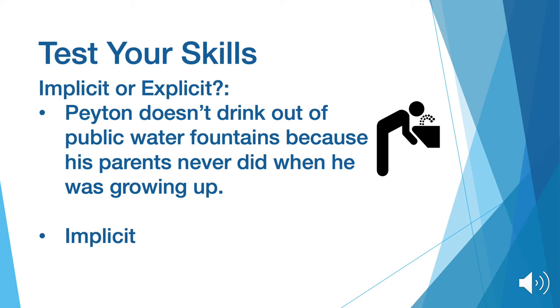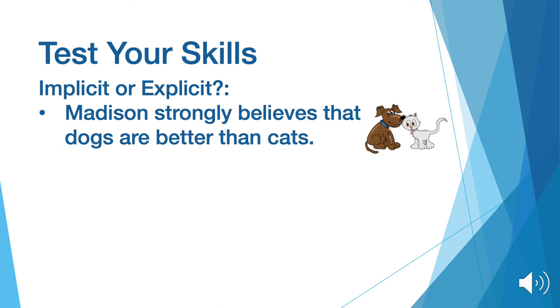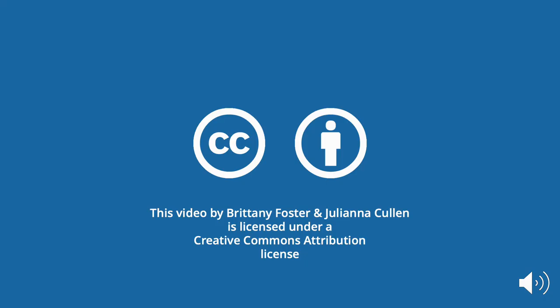Let's try one last one. Madison strongly believes that dogs are better than cats. This example is explicit. We know that this is explicit because Madison is aware that she has a preference that dogs are better than cats.